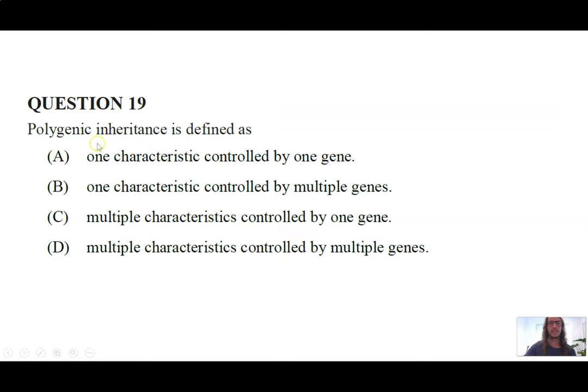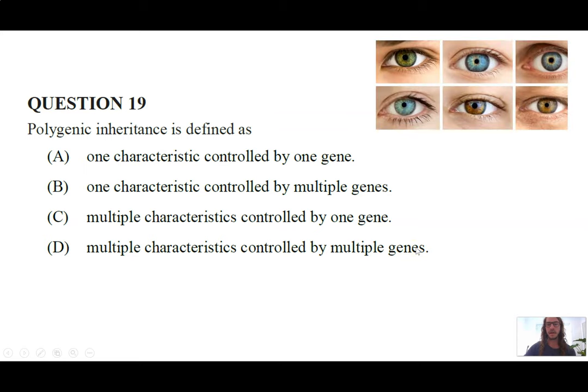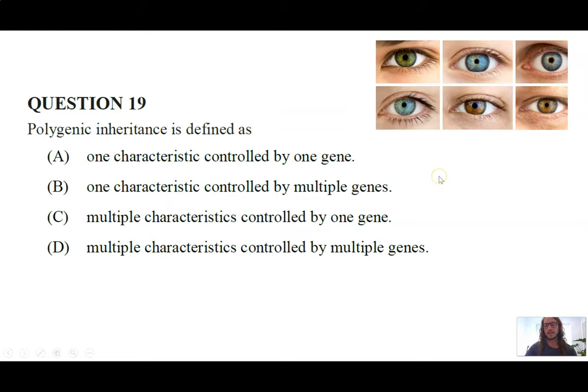Next question, polygenic inheritance is defined as? Again, I will talk through this question, but feel free to pause the video here to give it a go first. Alright, poly means more than one. So we're talking about more than one gene inheritance. So we can immediately rule out A, one characteristic controlled by one gene. It's polygenic we're talking about. One characteristic controlled by, okay, multiple genes. That could be a go. Multiple characteristics controlled by, again, rule that out. D, multiple characteristics controlled by multiple genes. So it's either B or D. The example I want to talk about is eye color. We've spoken about in a previous video that eye color is not a simple trait. There are many different genes that create that one characteristic. Lastly, there's actually 16 different genes that could be responsible for eye color. So the answer is B and I hope that that example helps you to remember.